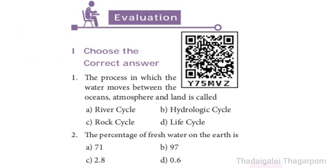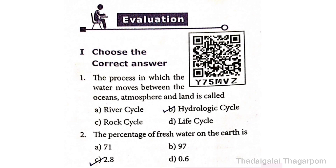The process in which the water moves between the oceans, atmosphere and land is called — River cycle, Hydrologic cycle, Rock cycle, or Life cycle. The correct answer is B option: Hydrologic cycle. The process in which the water moves between the oceans, atmosphere and land is called Hydrologic cycle.